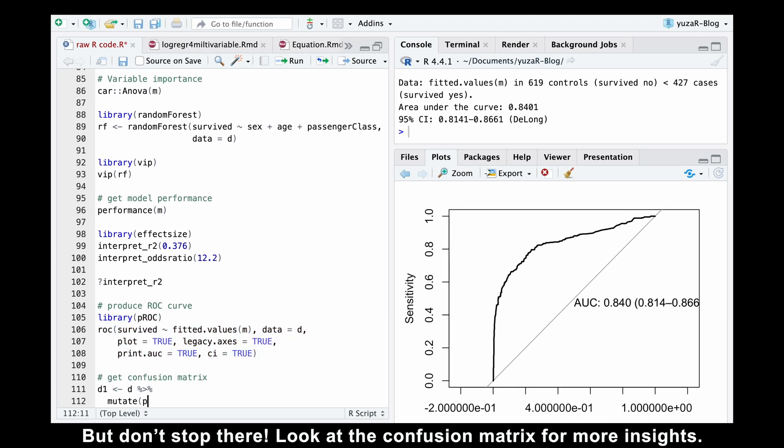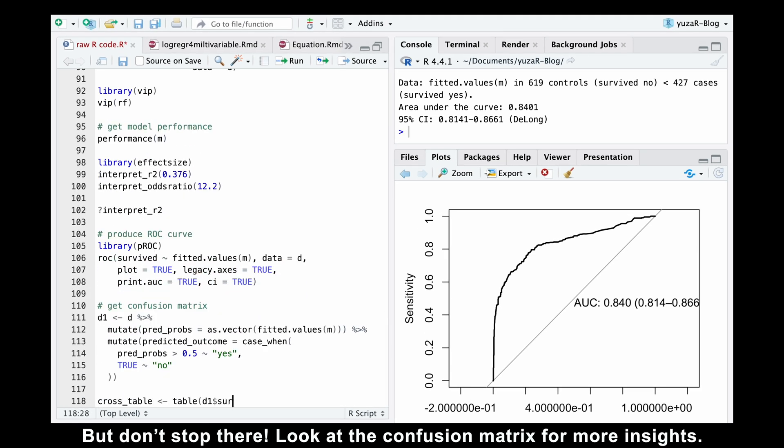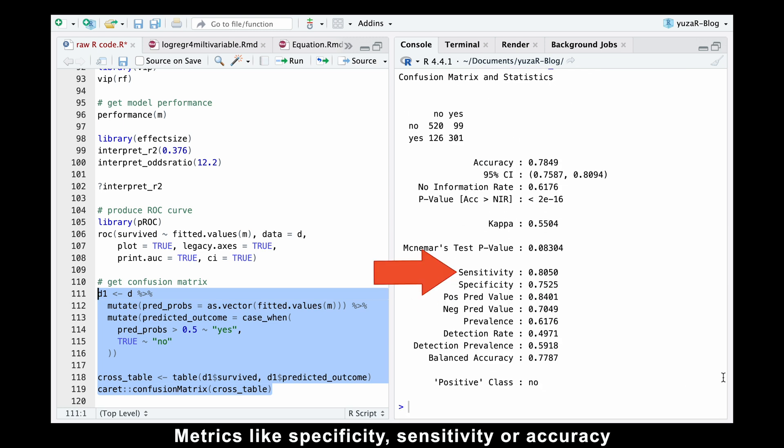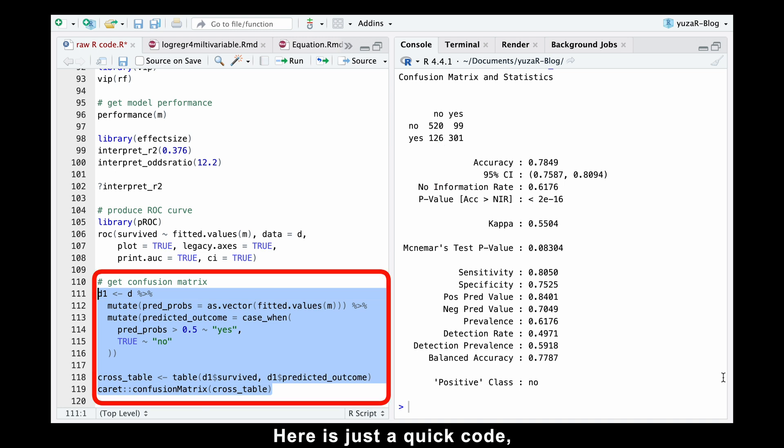But don't stop there. Look at the confusion matrix for more insights. Metrics like specificity, sensitivity, or accuracy can give you a complete picture of your model's performance. Here's just a quick note, but if you want me to break down these metrics for you in a separate video, let me know in the comments below.